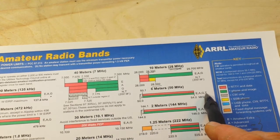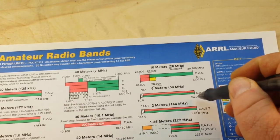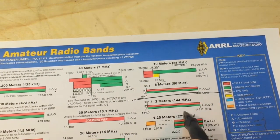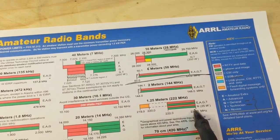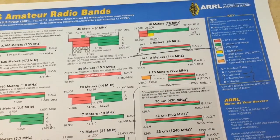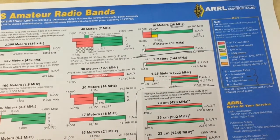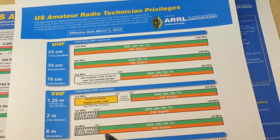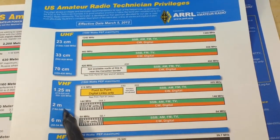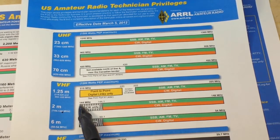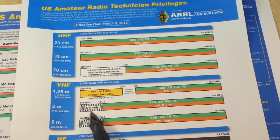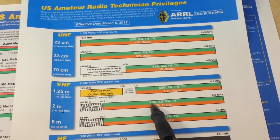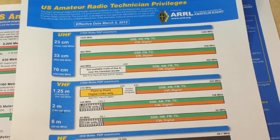Six meters — technician. Two meters — now this is where we're getting into the VHF. Technicians have basically all privileges there. 1.25 meters, 70 centimeters — this is the UHF band — and again, technicians have all the privileges there. Looking at the two-meter band in detail, from 144 MHz to 144.1 it's CW only, and from 144.1 to 148 we have single sideband, AM, FM, TV — all the nice privileges. That's why I'm hoping I'll pass my General so I'll have access to more frequencies.